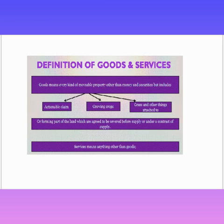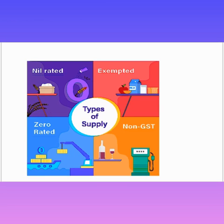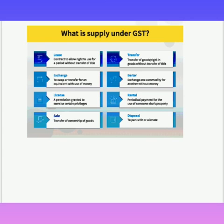Now let's go to the definition of supply. As the tax department is so clever, it never gives you any loophole for tax evasion or tax avoidance, and that is why every related term has been covered under the definition of supply. Supply under GST includes lease, transfer, exchange, barter, license, rental, disposal, and sale.